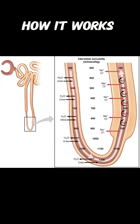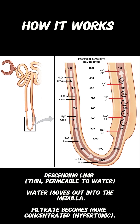The loop of Henle is located in the medulla, and the medulla has a medullary gradient, meaning the deeper you go in the medulla, the more osmolarity you also have. The loop of Henle has an ascending limb and a descending limb. In the descending limb, you have a lot of aquaporins, so it is permeable to water. So as urine goes down the descending limb, more water is absorbed, concentrating the urine.